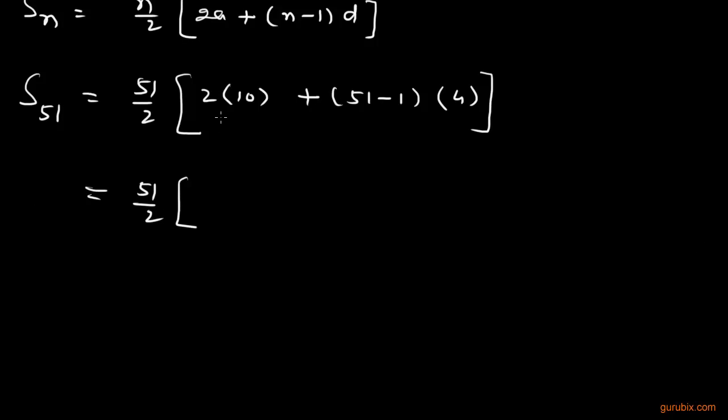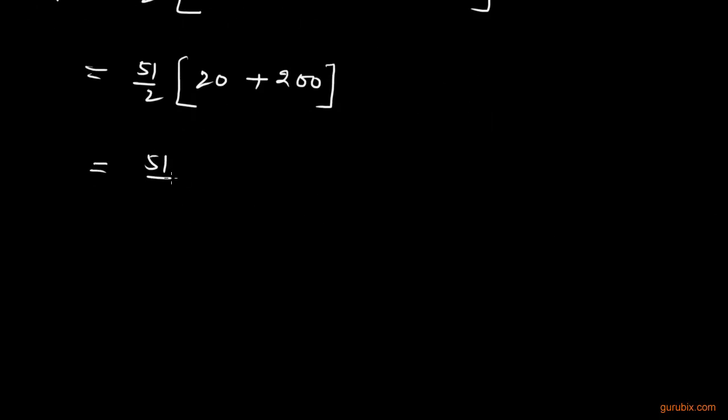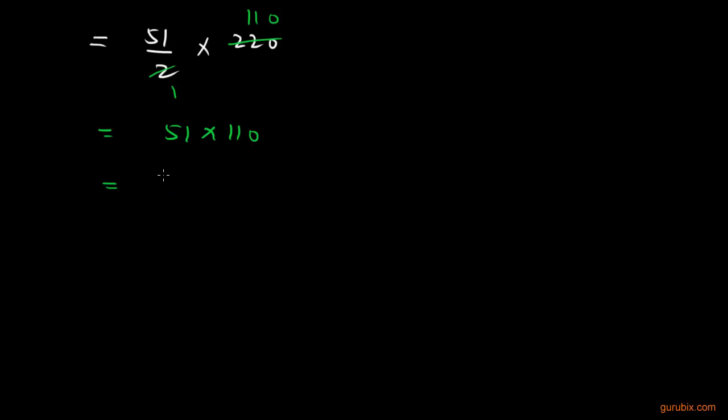Now we shall solve the values in the bracket. That is 2 into 10 means 20 plus 51 minus 1 equals 50. 50 multiplied by 4 equals 200. So this equals 51 over 2 multiplied by 220. We can cancel out this 2 with this 220 to get 110. This equals 51 multiplied by 110. We get 5610.